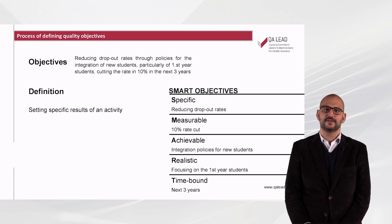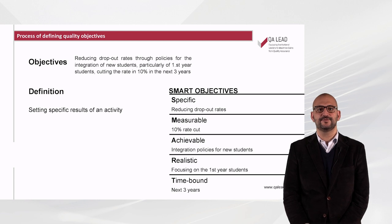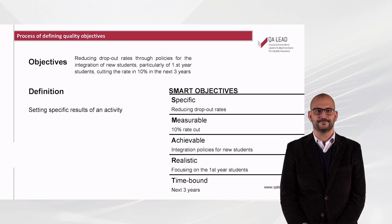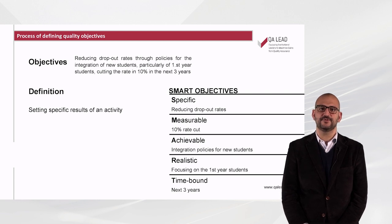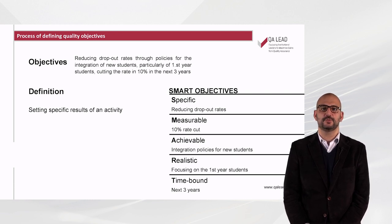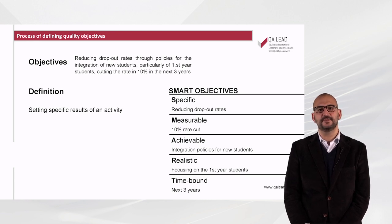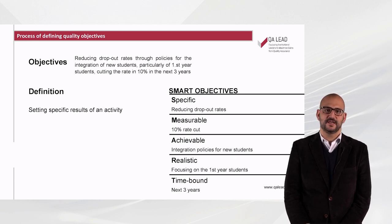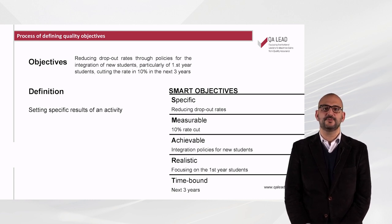One of the tools best known for goal setting goes by the name SMART Objectives. Let's see what the SMART tool is by giving an example of a quality objective. S stands for Specific, which means the objective must be clear for everyone — for example, reducing dropout rates. M stands for Measurable, which implies measuring the objective to make sure that progress can be evaluated and monitored — a 10% cut is an example.